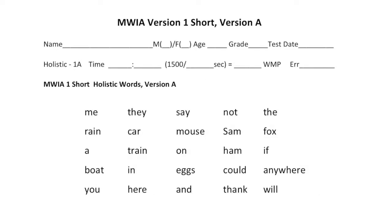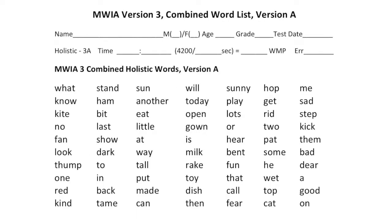Students scoring at the first grade level or below take the MWIA 1 original or the MWIA 1 short. Students scoring above that — a reading grade level of 1.1 or higher on the Quick Screen test — should take the MWIA 3 or the MWIA 3 short.